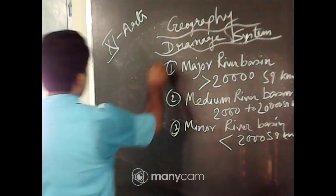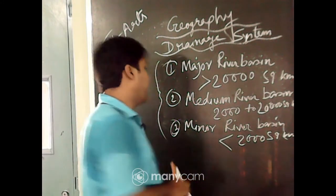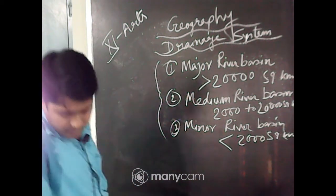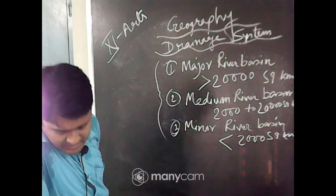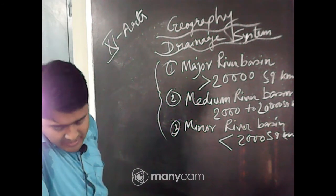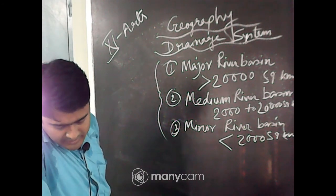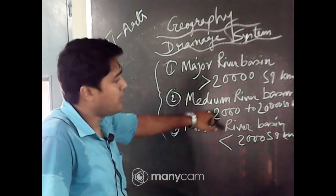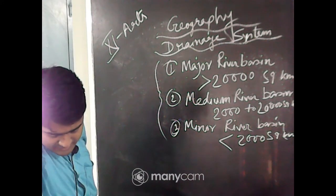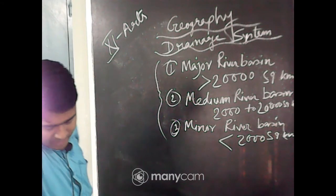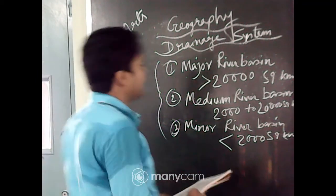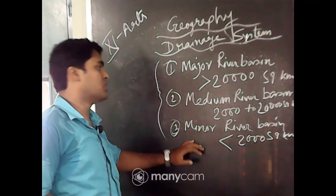These are the three parts: major river basin, medium river basin and minor river basin. The major river basin, with area more than 20,000 square kilometers, includes 14 drainage basins such as Ganga, Brahmaputra, Krishna, Tapi, Narmada, Mahi, Penner, Sabarmati and Barak, etc. The medium river basin, 2,000 to 20,000 square kilometers, has 44 rivers — Kalindi, Periyar, Mahi, etc. The minor river basin, with catchment area less than 2,000 square kilometers, includes very small rivers like Luni, etc.